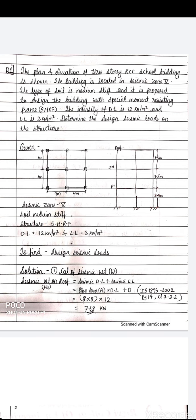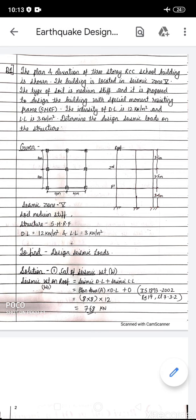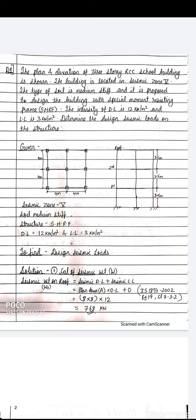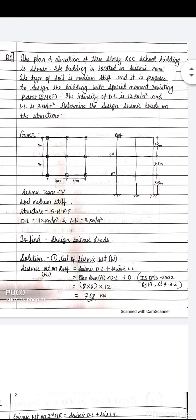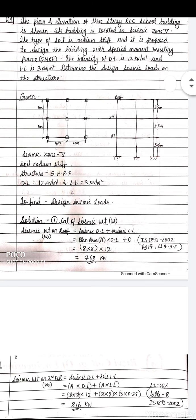I have drawn the plan and elevation given in the question. The plan is 4×4 — 4 meters in X direction and 4 meters in Y direction — wait, it's 8×8. The floor-to-floor height in the elevation is 3.5 meters, and there are three floors: first floor, second floor, and roof floor. Given data: seismic zone 5, medium stiff soil, special moment resisting frame, dead load 12 kN/m², live load 3 kN/m². We have to find the design seismic loads.